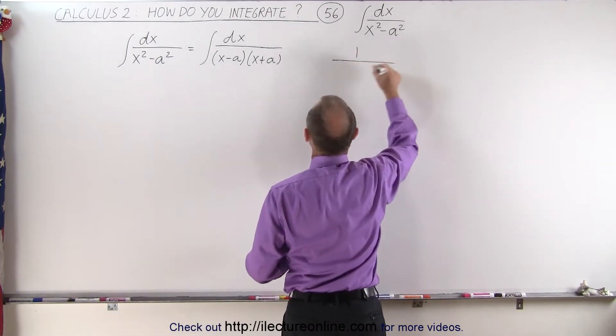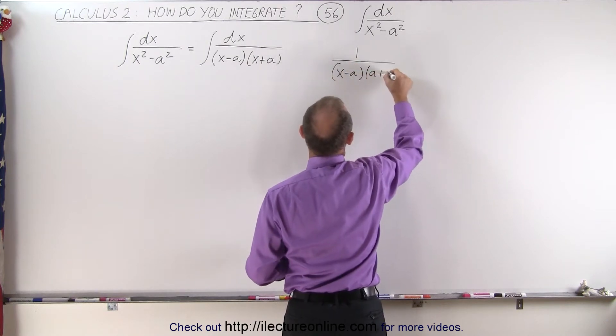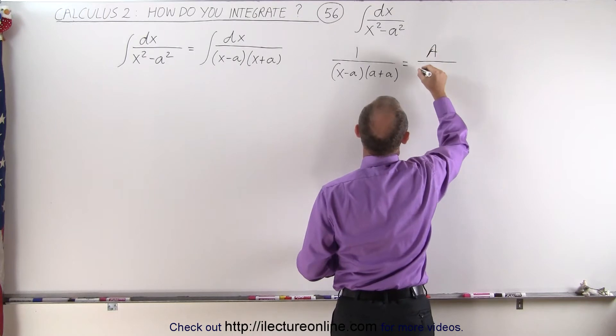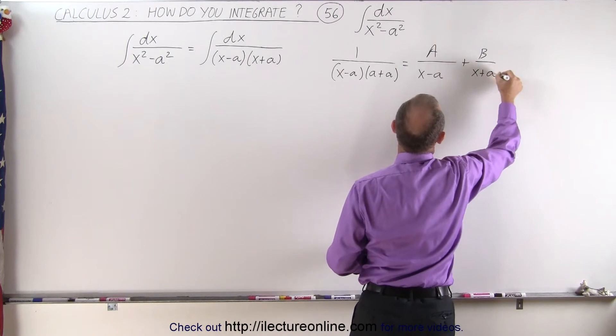We can say that 1 over x minus a times x plus a is equal to A over x minus a plus B over x plus a.